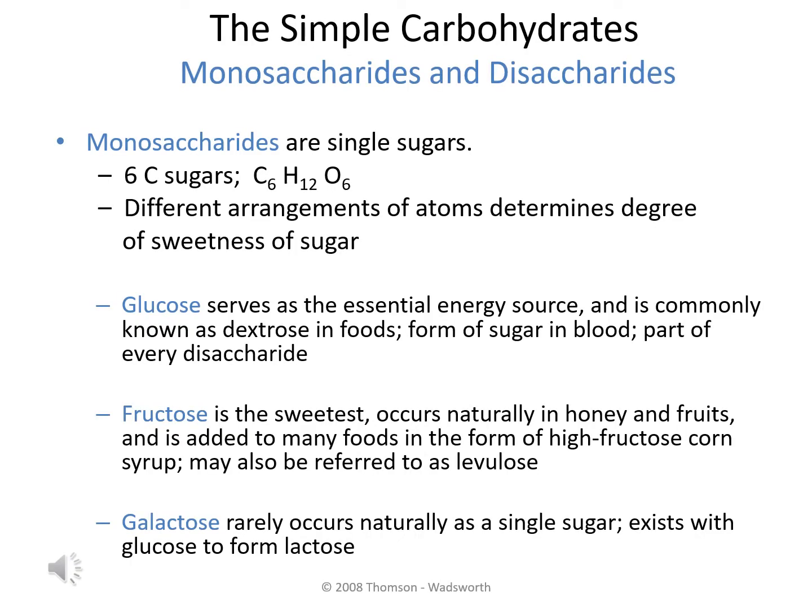The first category we're going to take a look at are the simple carbohydrates, which consists of monosaccharides and disaccharides. The monosaccharides are single sugars, and most of them are classified as hexoses, which means that they have six sides to their structure. Their chemical makeup is six carbons, 12 hydrogens, and six oxygens. The way that the molecule is arranged actually is what determines how sweet we can perceive from our taste buds when we consume these specific sugars. The first to note is glucose, which is the most essential energy source that our body needs.